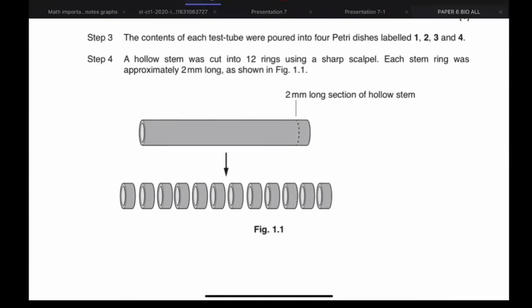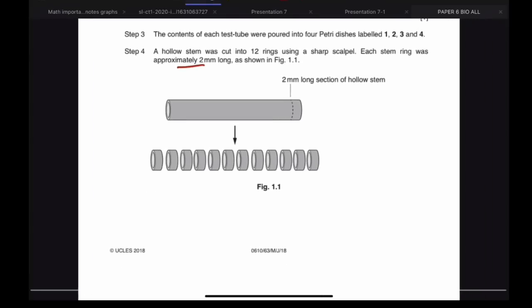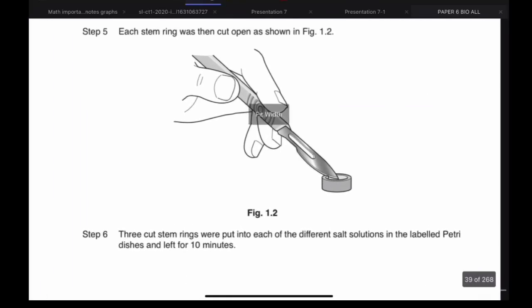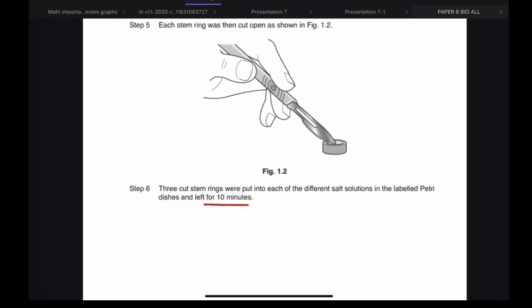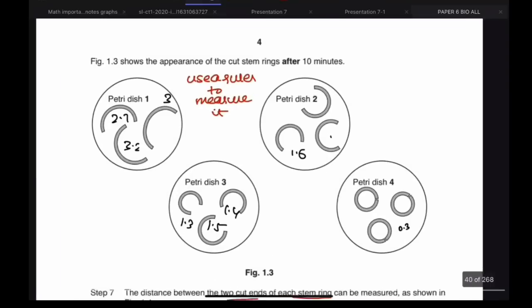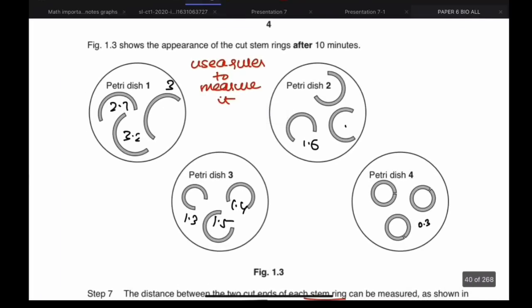Now the contents of each test tube were poured into four different petri dishes, labeled one through four, and a hollow stem was cut into 12 rings using a sharp scalpel. Each stem ring was approximately two millimeters long — we're assuming equal length. Each stem ring was cut open, and three stem rings were put into different salt solutions in the petri dish and left for 10 minutes.